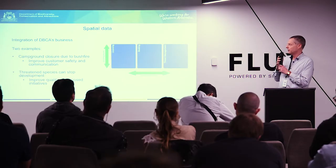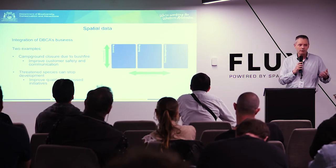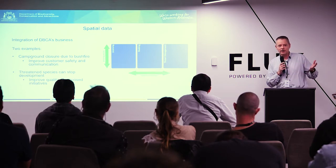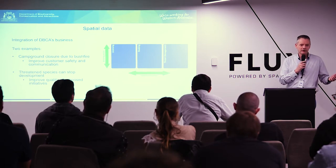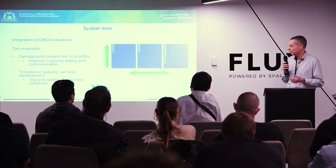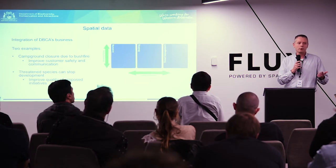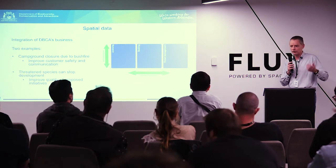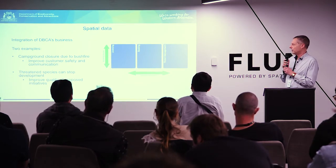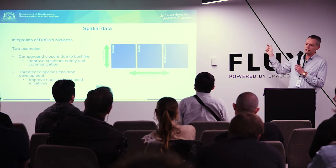We have integrated those stacks vertically. We have built building blocks — basically one licensing system, and we can build a second licensing system quite quickly using those building blocks. If we have a booking system for a campground, we have a booking system for moorings around Rottnest Island. Reuse, reuse. However, that is vertically integrated. What we want to do is horizontal integration.